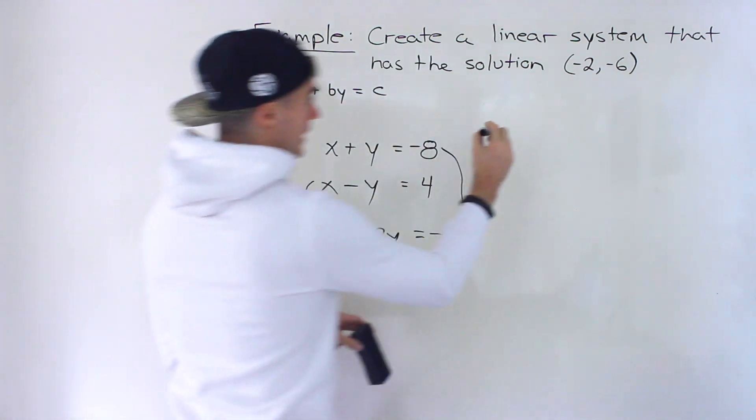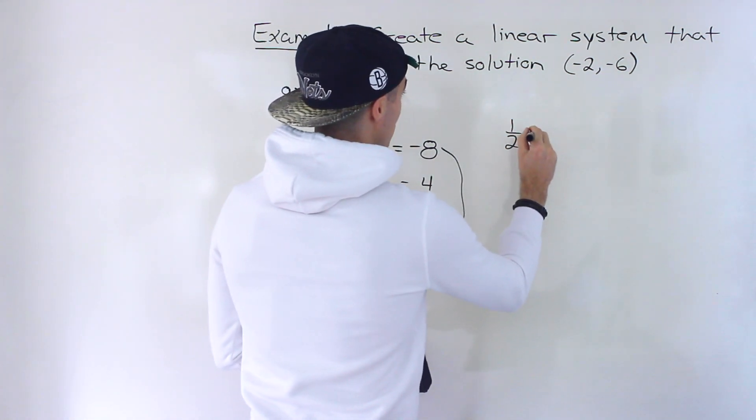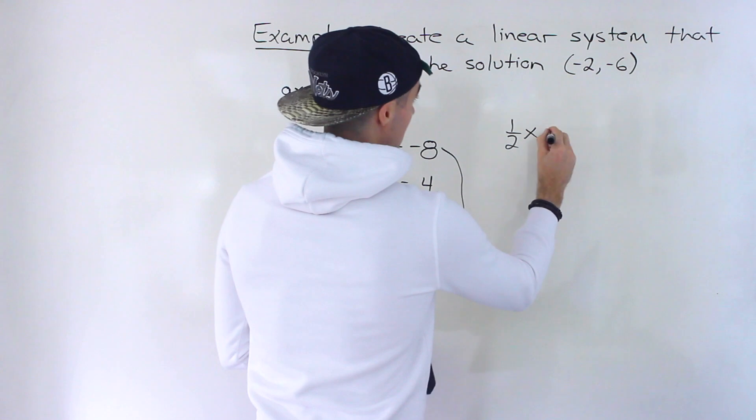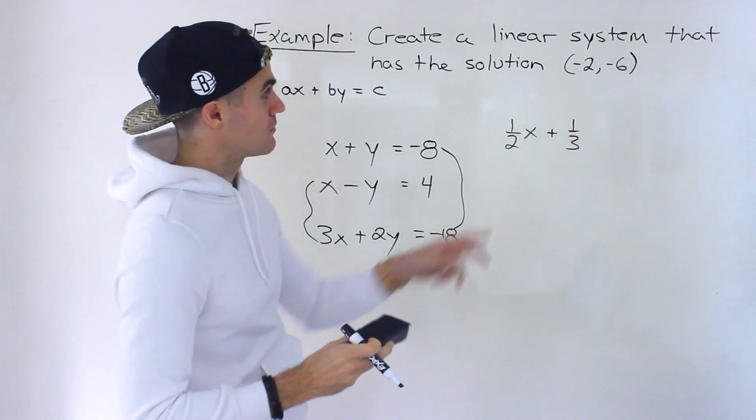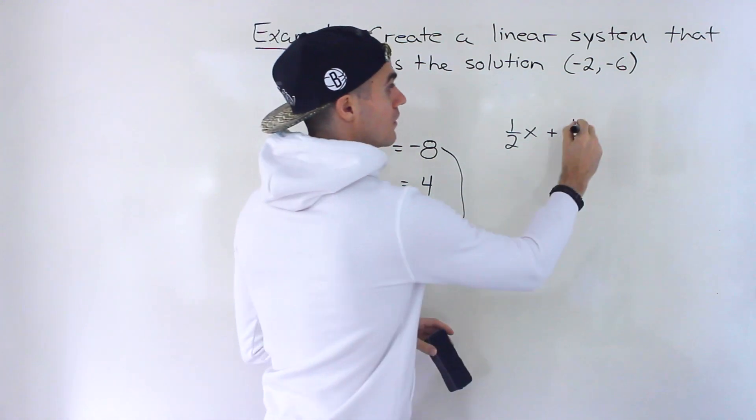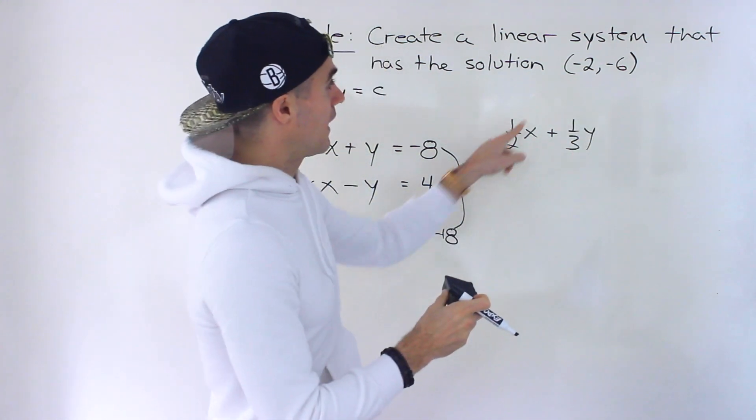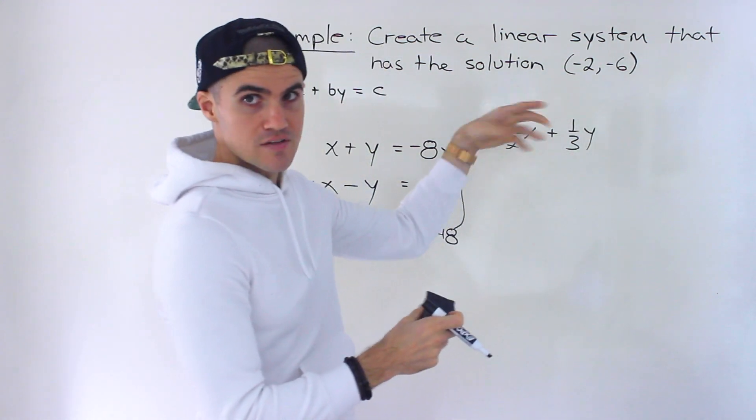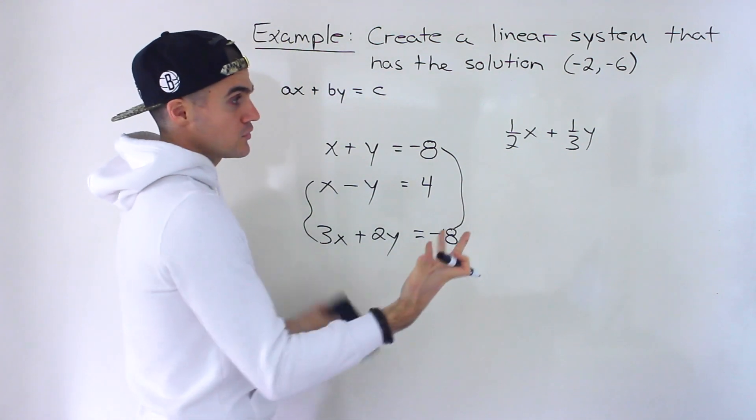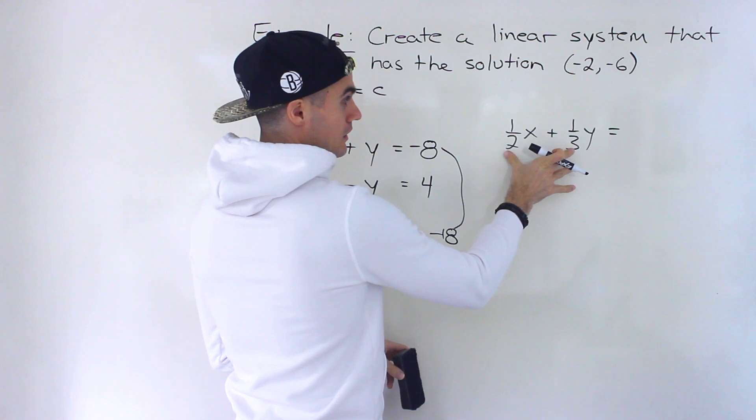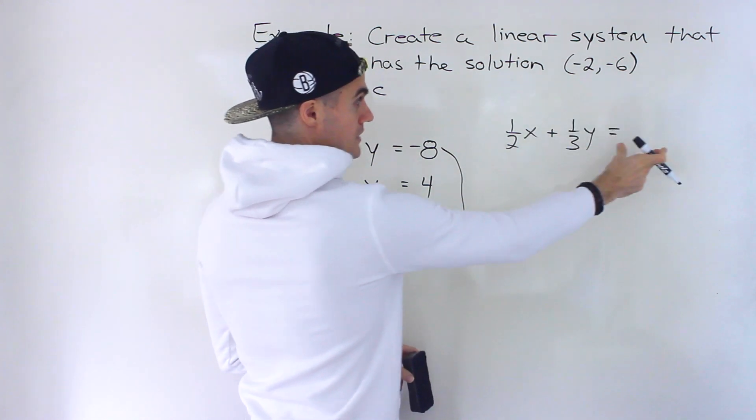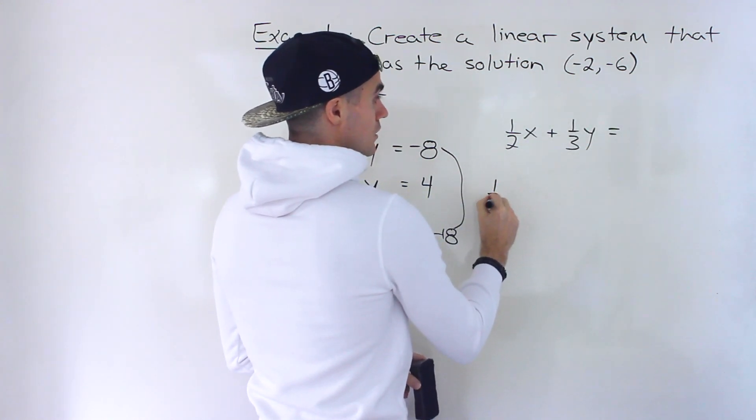And then you could even incorporate fractions if you want. So let's say maybe for a, we picked one half, and then maybe for b, let's pick one third. Let's maybe pick something where when we multiply the one half by the negative 2, the one third by the negative 6, we're going to get smooth numbers. You don't have to. You can have a fraction on this right side as well, but I'm going to pick these fractions so we have an integer on this side.